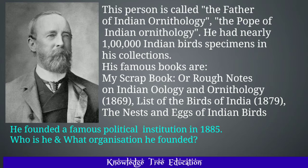This is a very interesting question. This person is called the Father of Indian Ornithology and the Pope of Indian Ornithology. He had nearly one lakh Indian bird specimens in his collection. His famous books are My Scrapbook or Rough Notes on Indian Ornithology and Ornithology 1869, List of the Birds of India 1879, and The Nest and Eggs of Indian Birds. This famous person founded a famous political institution in 1885. Who is he and what organization did he found? And the answer is Allan Octavian Hume, the founder of the Indian National Congress.